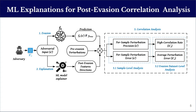Our diagnosis is guided by the post-evasion feature directions returned by the machine learning explainer. We assess the effectiveness of a single feature perturbation by comparing its direction with respect to the desired label fixed by the adversary. Therefore, we employ machine learning explainers on the adversary's input in order to detect the direction of each perturbed feature.